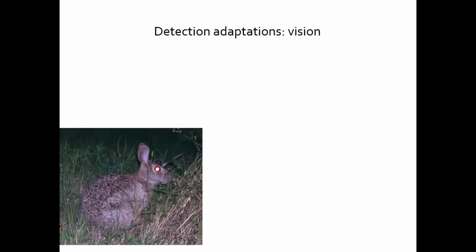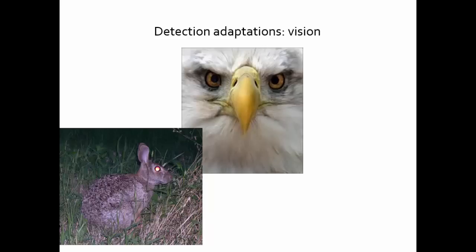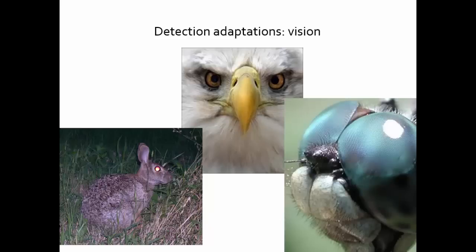The next step is detection. If you're a successful prey item, you will detect your predator before they detect you. If you're a successful predator, you're very good at detecting your prey. The predator adaptation here is very good vision — an eagle can detect prey from over a thousand feet away. This prey item has eyes on the side of its head and ears it can rotate, so it can detect an approaching predator. An adult dragonfly has eyes that are both predator-like and prey-like — nearly 360-degree vision to spot a bird attack, and also sharp enough to spot small flying insects like mosquitoes as prey.